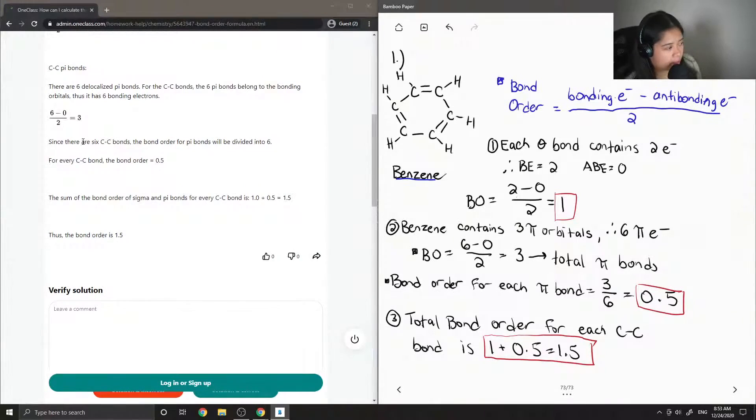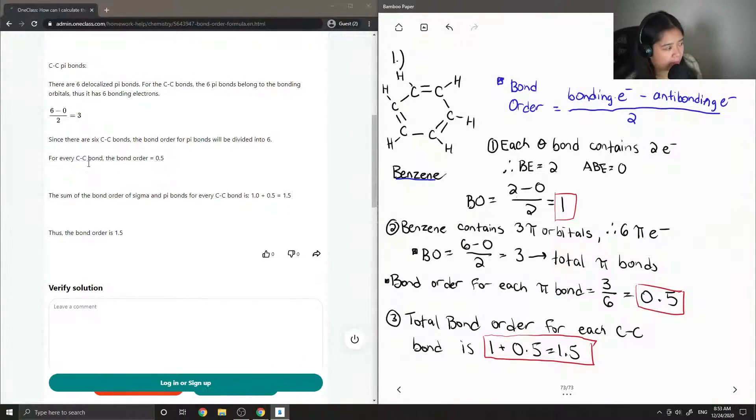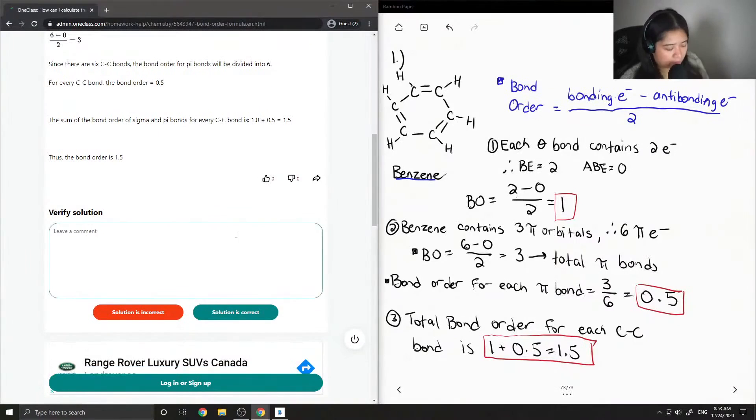Since there are six carbon-carbon bonds, the bond order for pi bonds will be divided into 6. So for every carbon-carbon bond, the bond order is equal to 0.5. So the sum of the bond order of sigma and pi bonds for every carbon-carbon bond is 1.5. Yep, so the solution is correct.